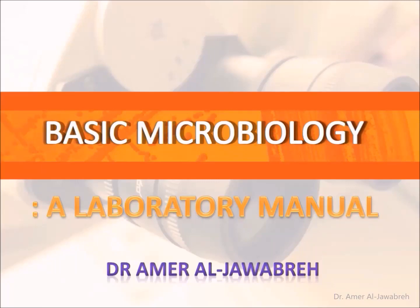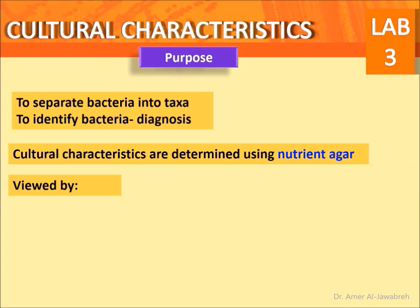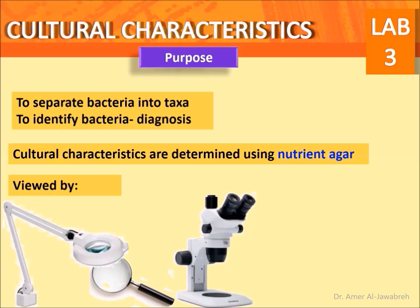Basic microbiology: a laboratory manual — colony morphology, description, and characteristics. Purpose: to separate bacteria into taxa and to identify bacteria for diagnosis. Cultural characteristics are determined using nutrient agar and are viewed best by stereo microscope, which provides a 3D image.